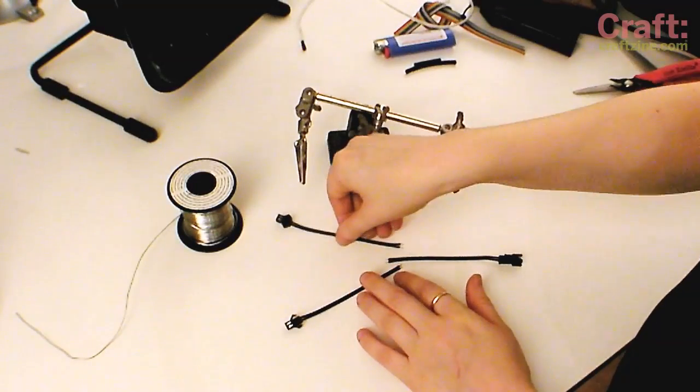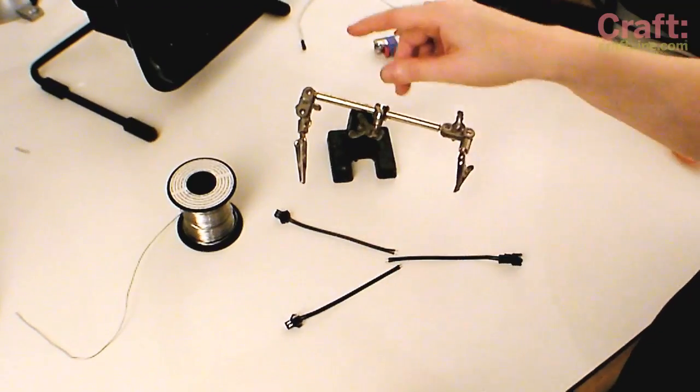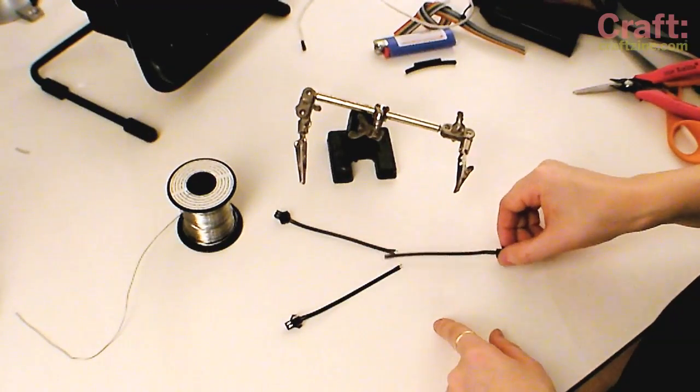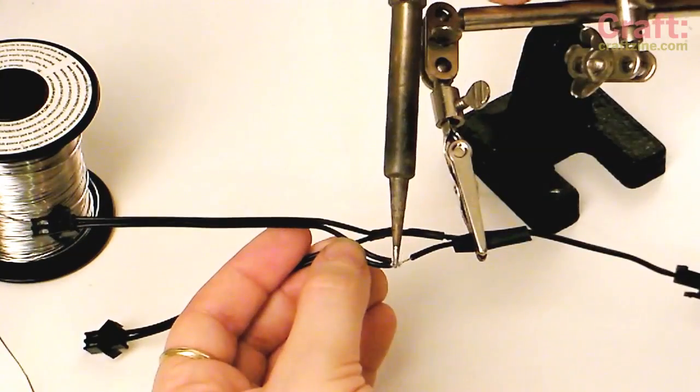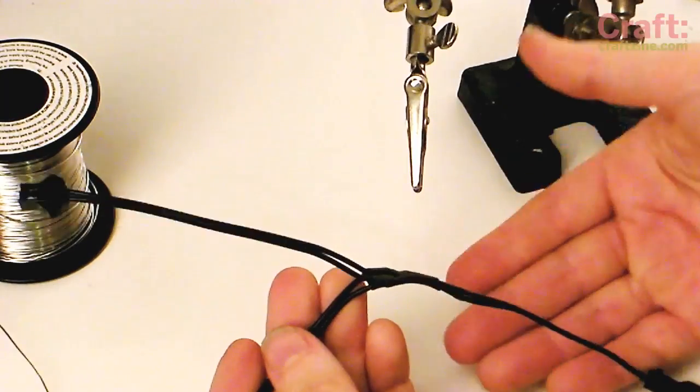Okay now we're going to make a Y connector. This will allow us to power two strips of EL easily using one inverter. You can also do this without connectors but just by soldering wires together, but this is slightly more elegant and easier to work with way.